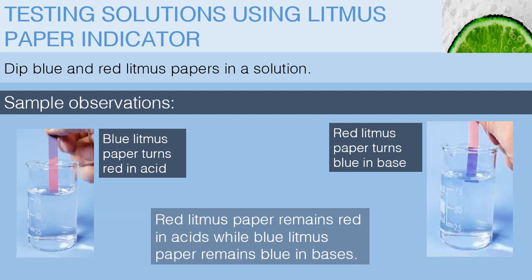It is also of great importance to note that the red litmus paper remains red in acids, while the blue litmus paper remains blue in bases.